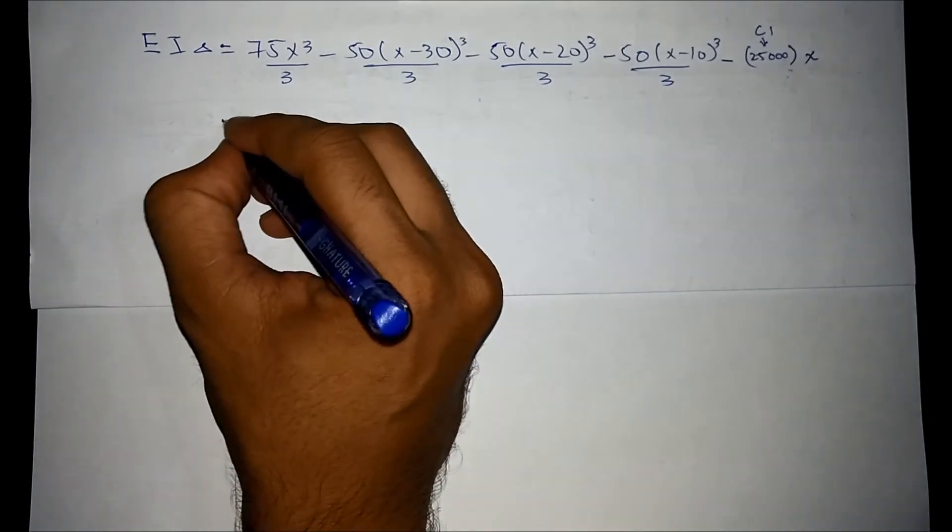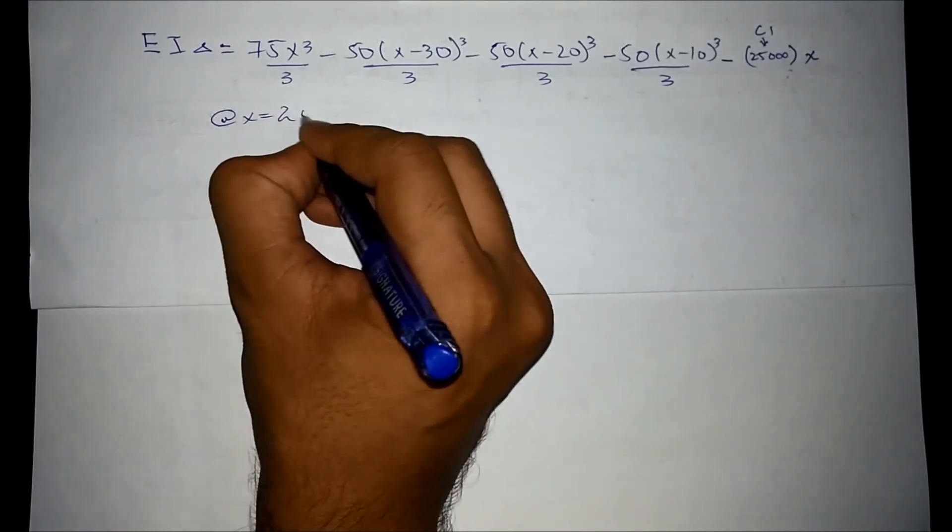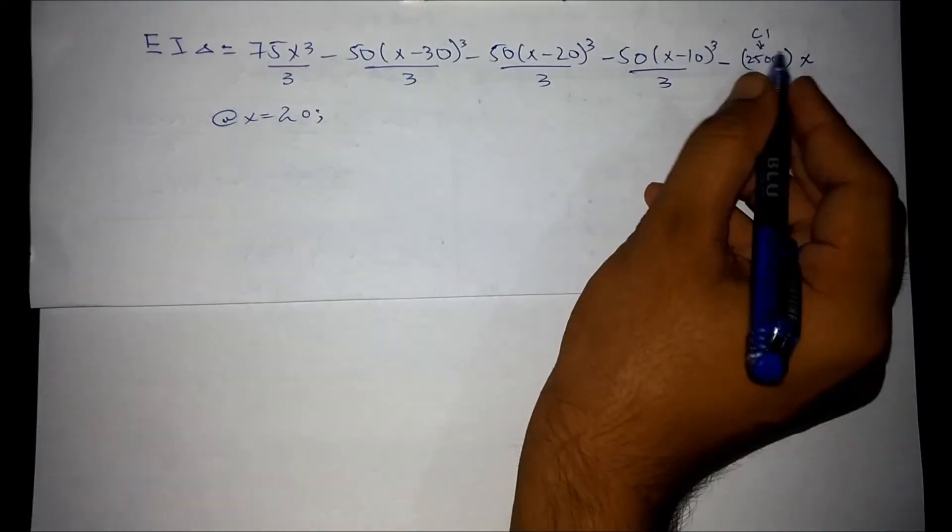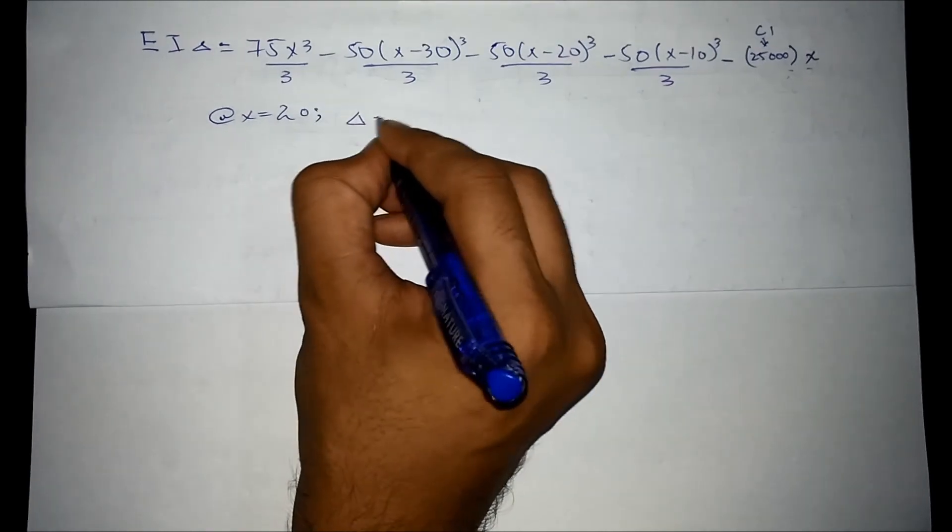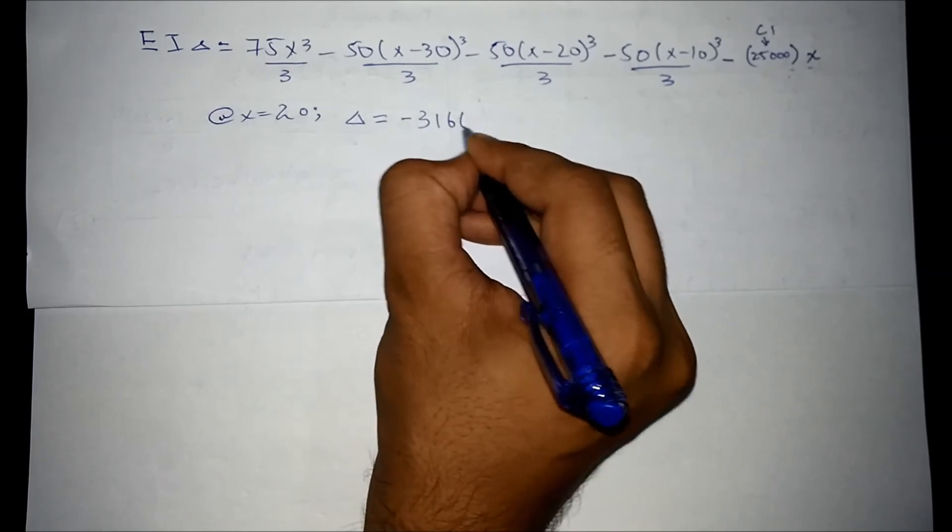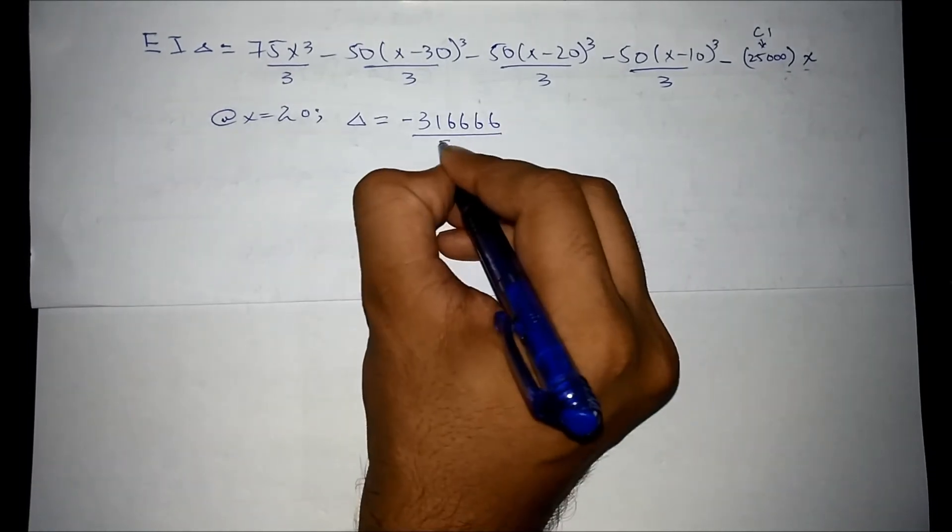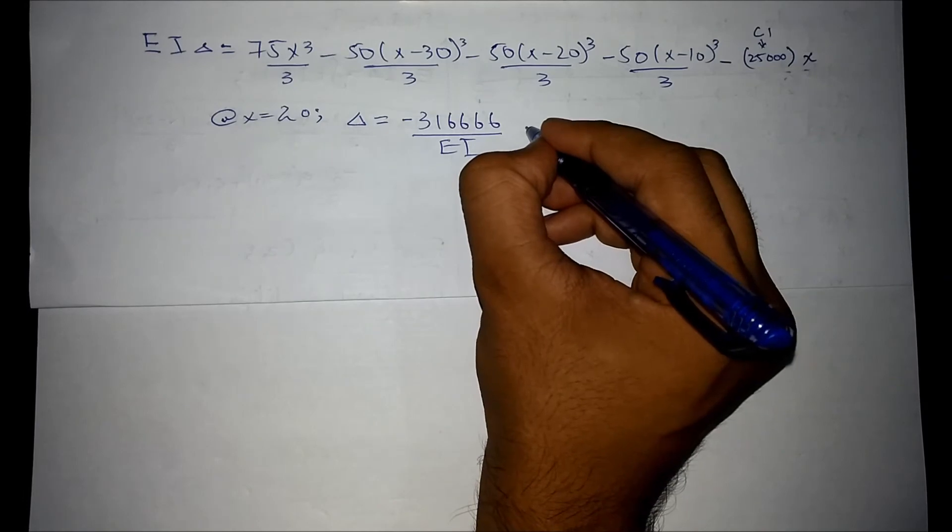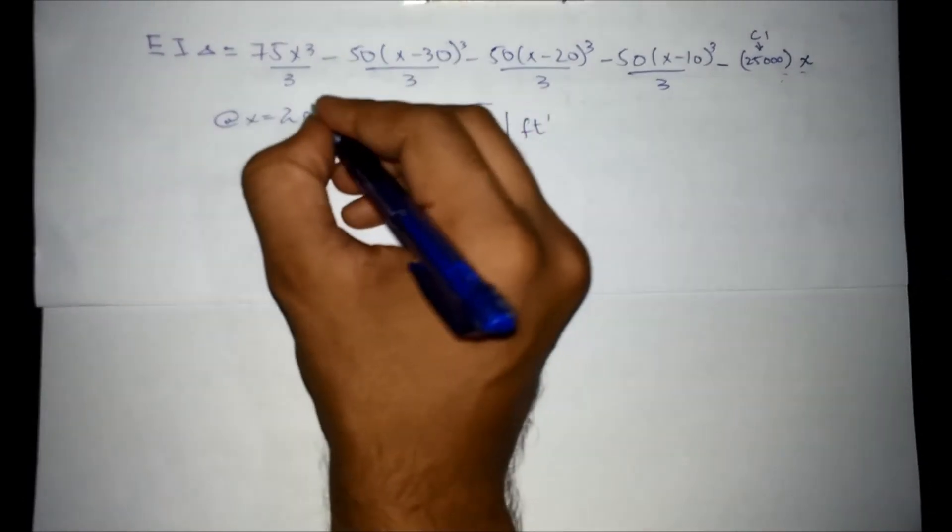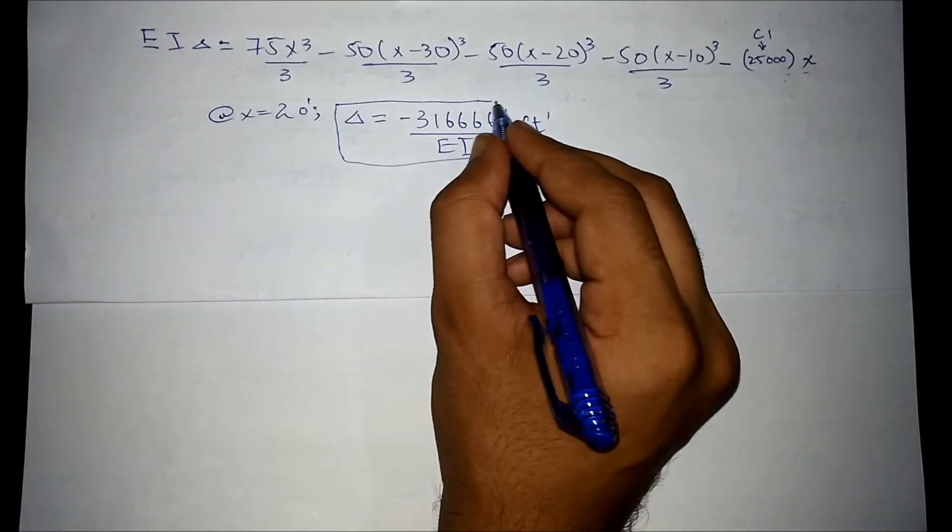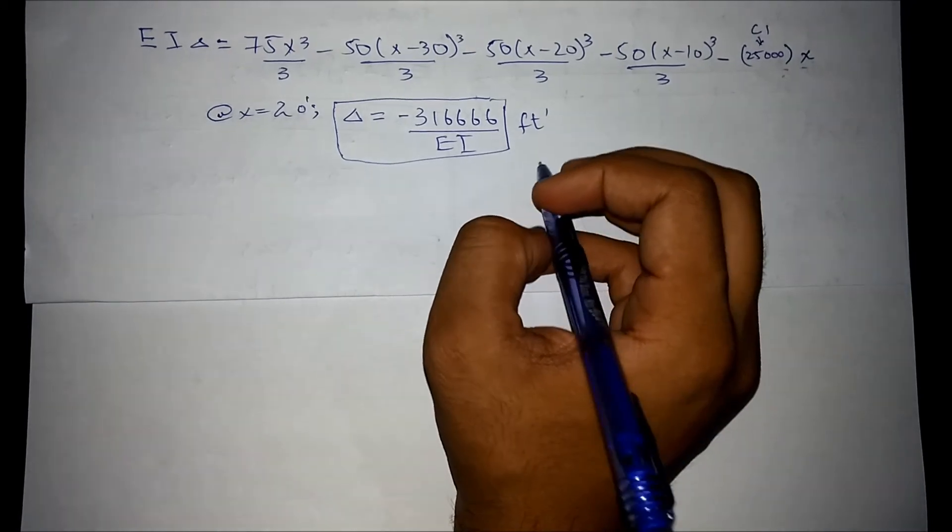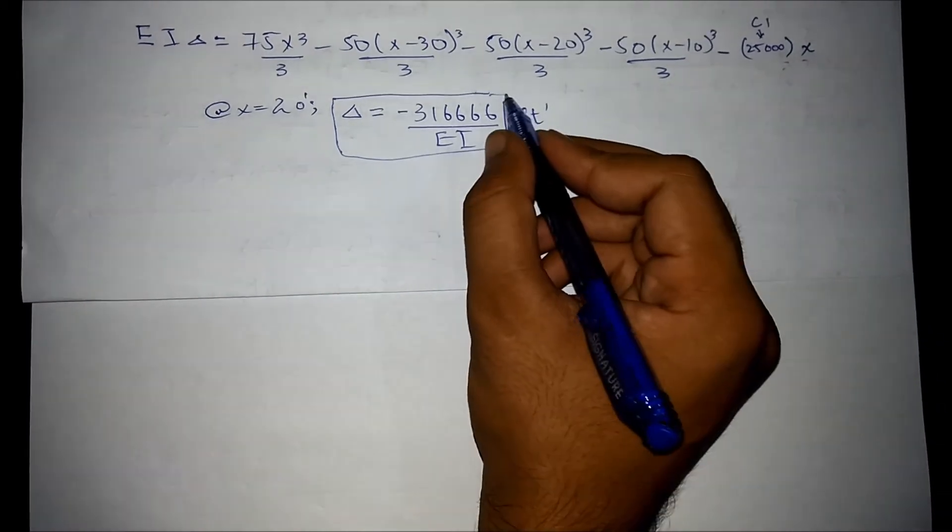So we were required to find out the deflection at x is equal to 20. Putting this equation here, we get a deflection value of 316,666 over EI in feet. Since we use the value of x in feet, so the deflection value is also in feet. Overall deflection value will always be in feet here.